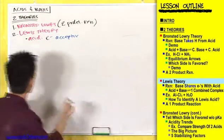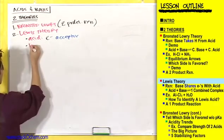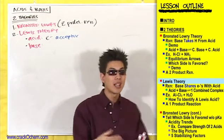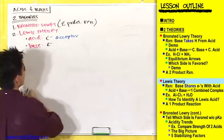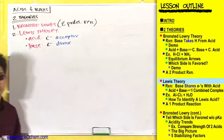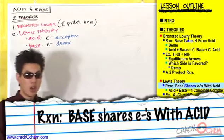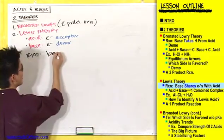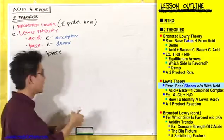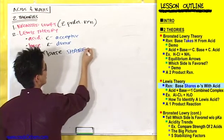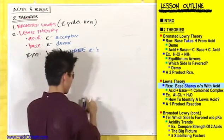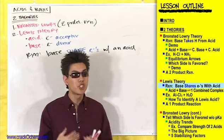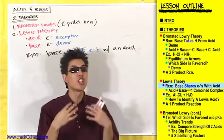Let's check out how we define a base in Lewis theory. If an acid is an electron acceptor, then a base is going to be an electron donor — they're opposites. So in a Lewis acid-base reaction, a base isn't going to take something; it's going to share electrons with an acid. With Brønsted-Lowry, a base took a hydrogen from an acid. Here, a base is going to share electrons with an acid.